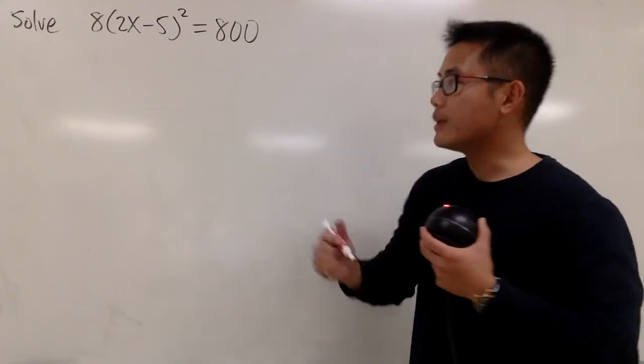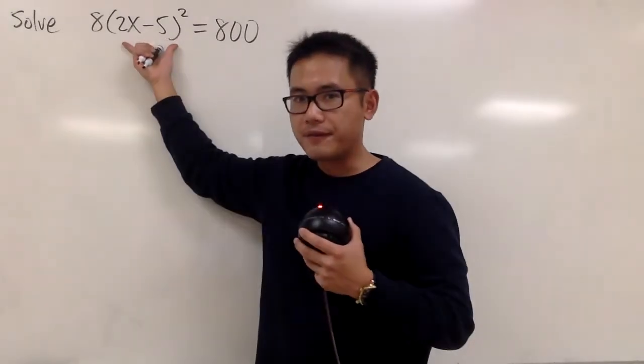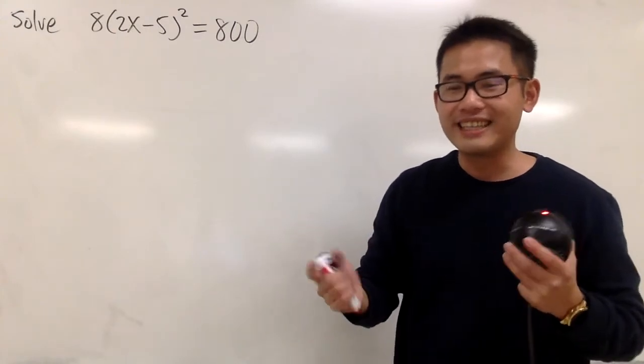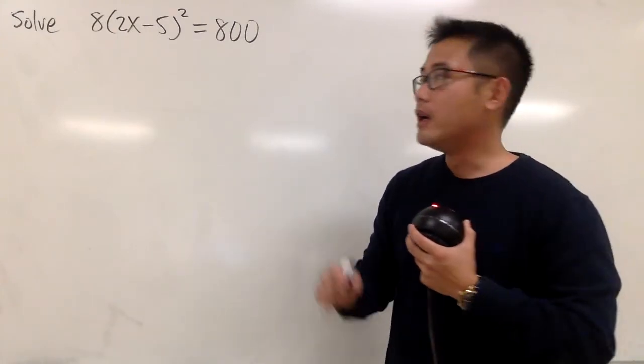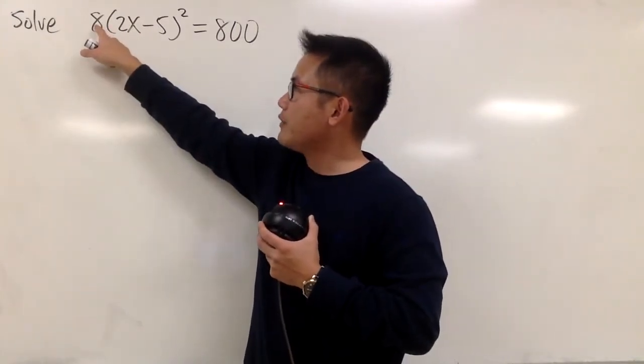In this case, we can just try to isolate this part first, and then take the square roots on both sides. It's easier that way. With that being said, take a look at this.